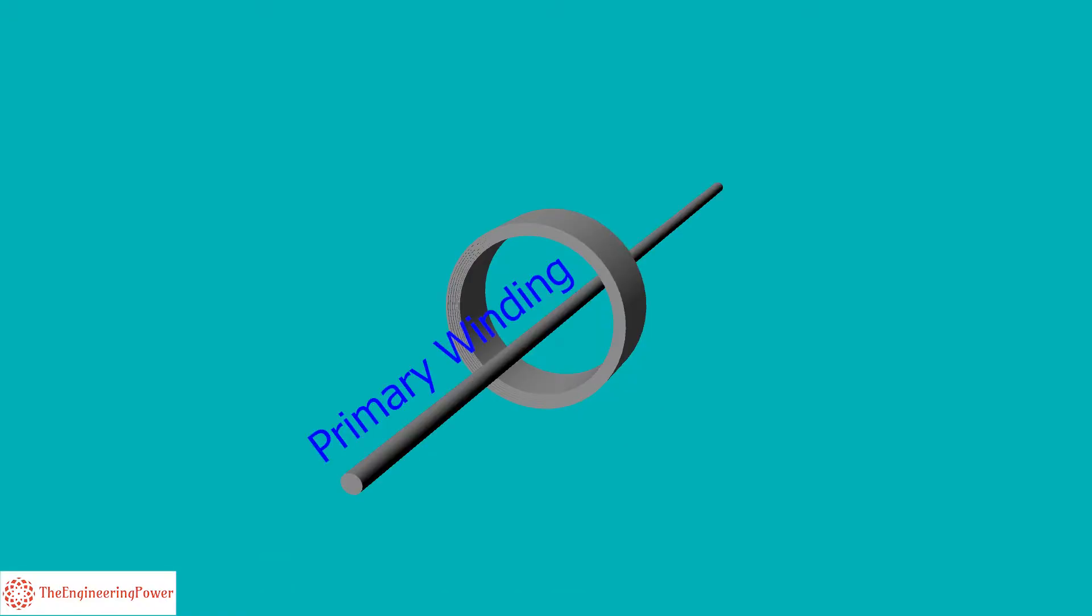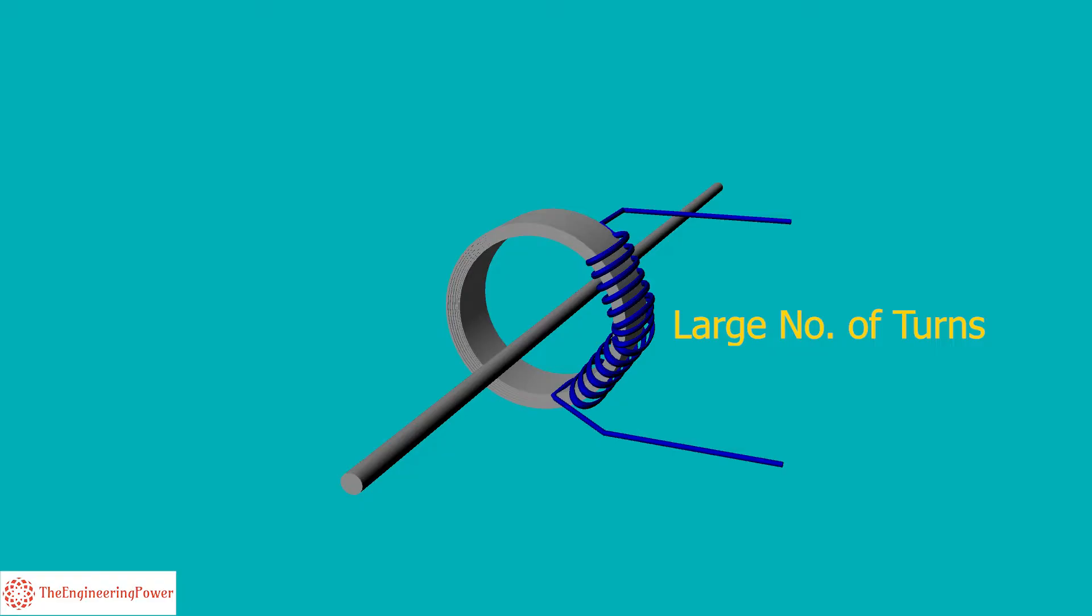The primary winding of the CT carries the current which is to be measured and is connected to the main circuit. The primary winding is normally a single turn winding and carries the full load current. The secondary winding is wrapped around the laminated core and has a large number of turns.